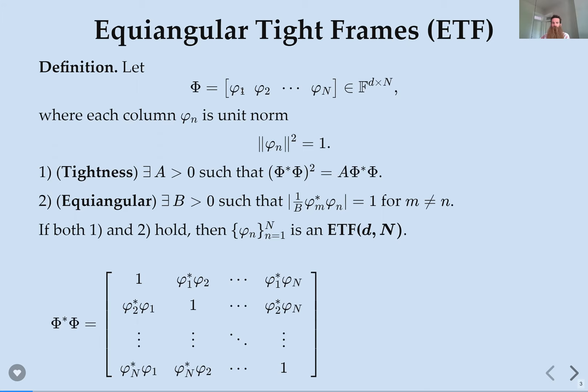When r=1, an answer to that question would be an equiangular tight frame. Those are the spaces that are as spread out as possible — you only have one principal angle to worry about. An equiangular tight frame is a bunch of vectors, usually arranged in a D×N matrix: N unit-norm vectors in D-dimensional space. If the Gram matrix is a scalar multiple of a projection, we call it a tight frame. And if the dot product between any two distinct vectors has the same modulus for every m≠n, we call this collection an ETF — written ETF(D,N).